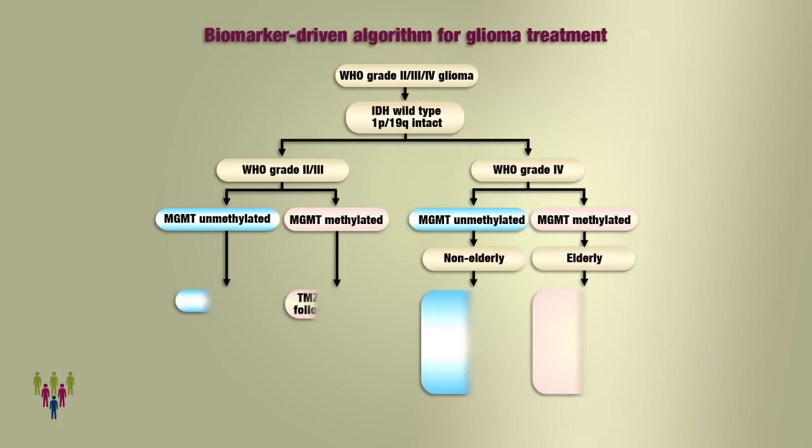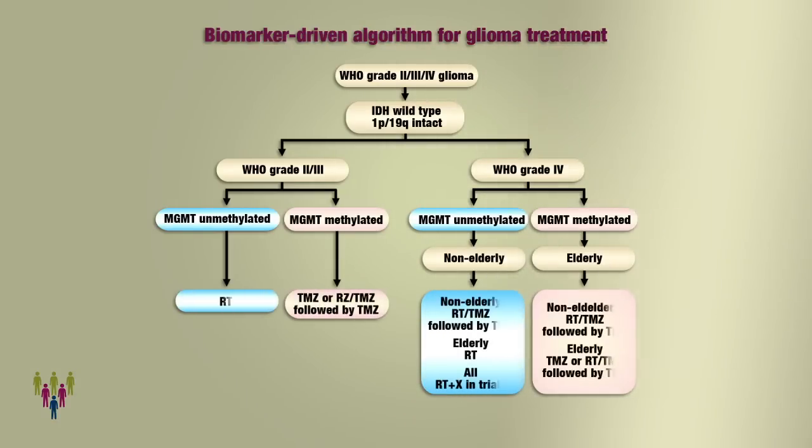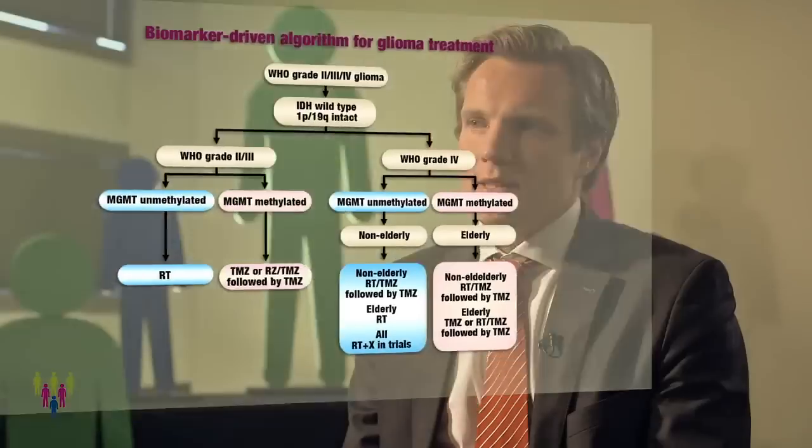The third marker is 1p19q deletion status. This is important to assess in gliomas, especially if there is clear cell histology — so if it's an oligodendroglial tumour — and this marker tells you a lot about the chemosensitivity of the tumour.